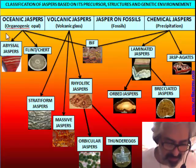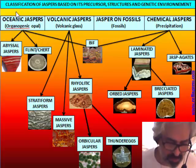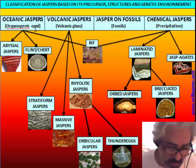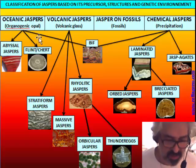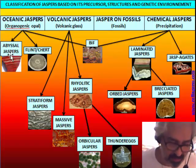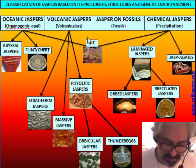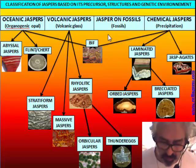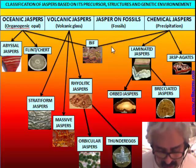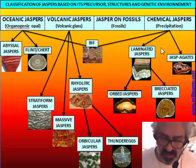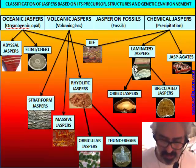The first classification was made by precursor. Oceanic jaspers have opal from organic organisms — amorphous opal — that is the precursor of abyssal jaspers and flint. Volcanic jaspers derive from the vitrification of volcanic glass. Some fossils are the transformation, a kind of pseudomorphose, of organic matter, mainly wood. And chemical jaspers are made by direct precipitation from solution.